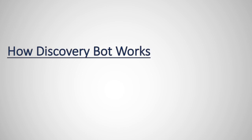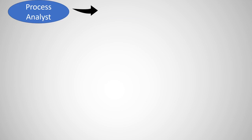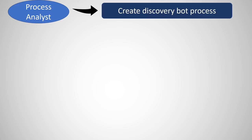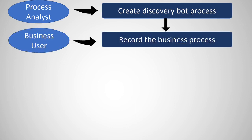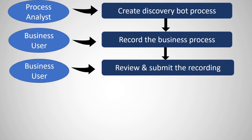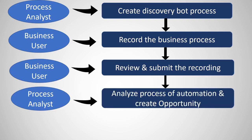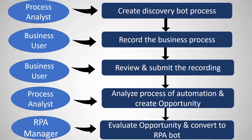Let's take a look at how Discovery Bot works. The first step is the Process Analyst creates a Discovery Bot process. Once created, the business user records the business process and reviews and submits the recording. Then the Process Analyst analyzes the process of automation and creates an opportunity. Finally, the RPA manager evaluates the opportunity and converts it into an RPA bot.